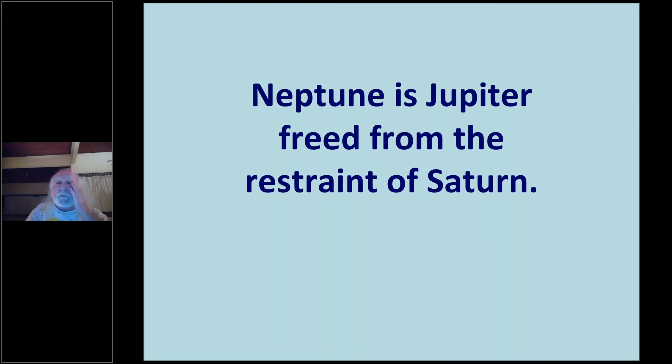Saturn is the outward bound. Saturn is the circumference. Beyond Saturn becomes, well, to the ancients, before there was telescopes, Saturn was the outward circumference. And beyond that, there was nothing until you went to the crystalline sphere of the fixed stars.